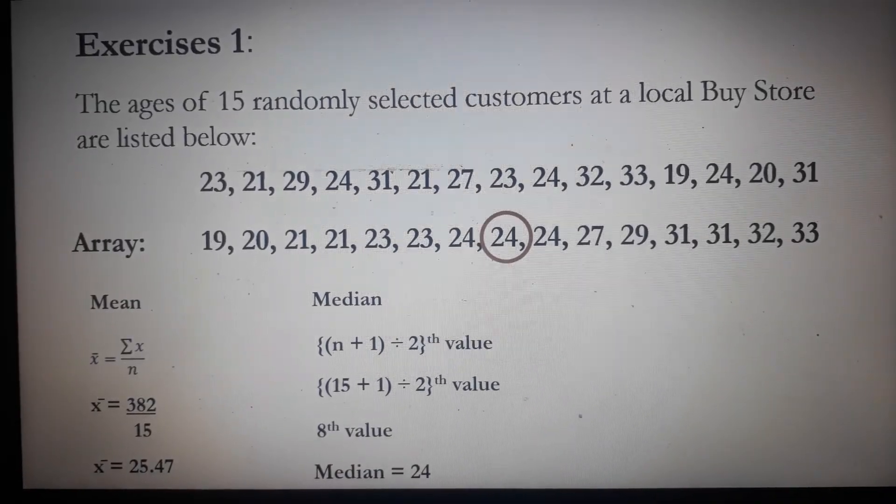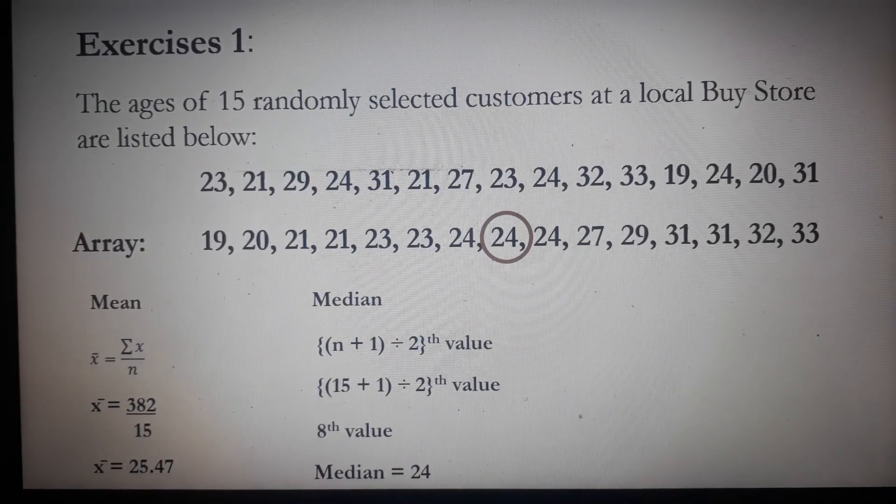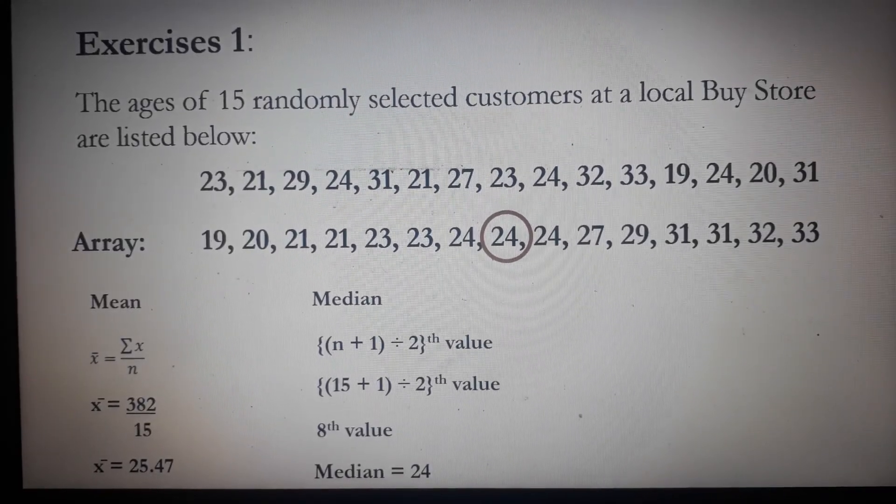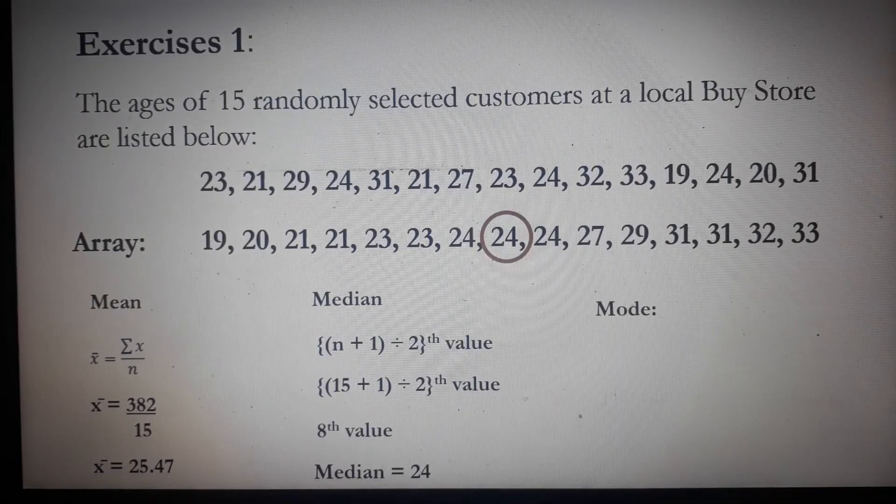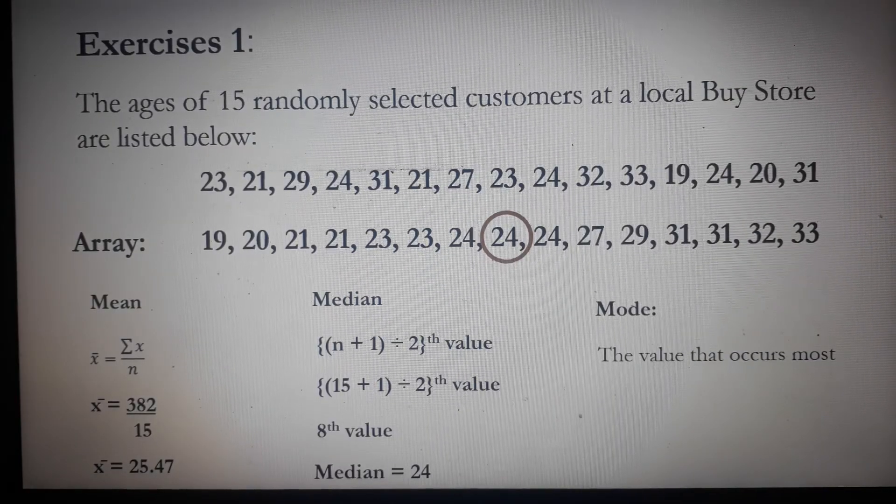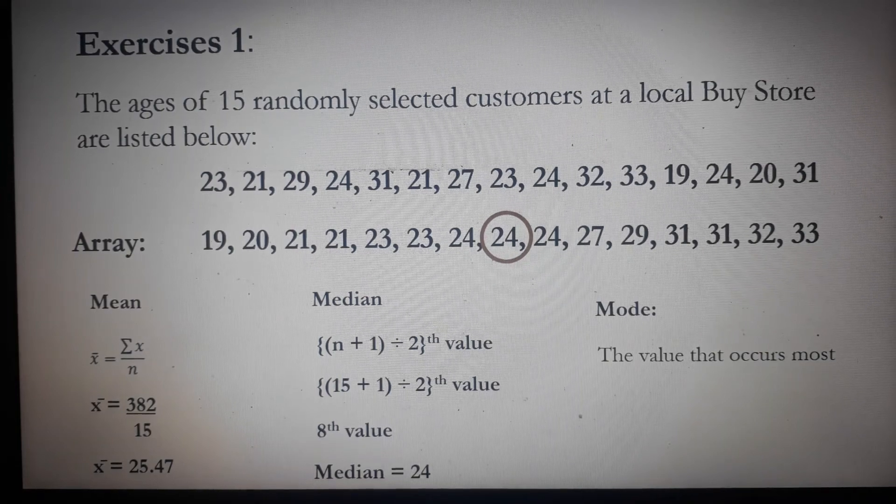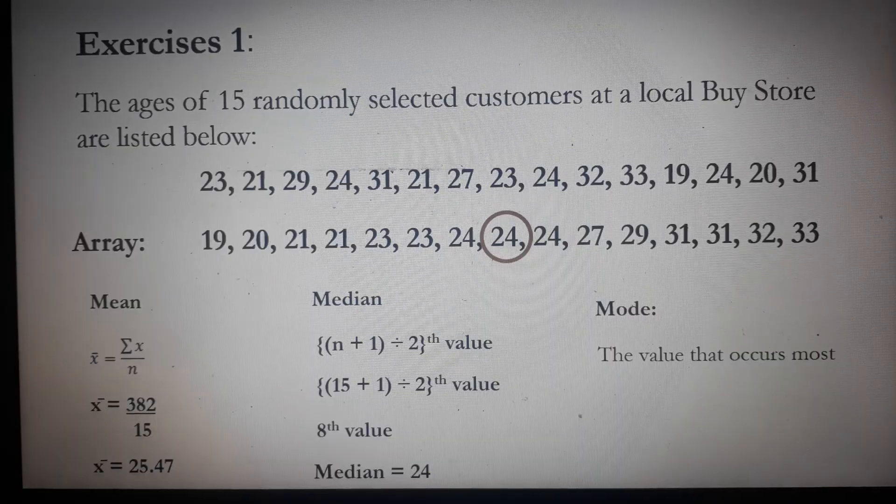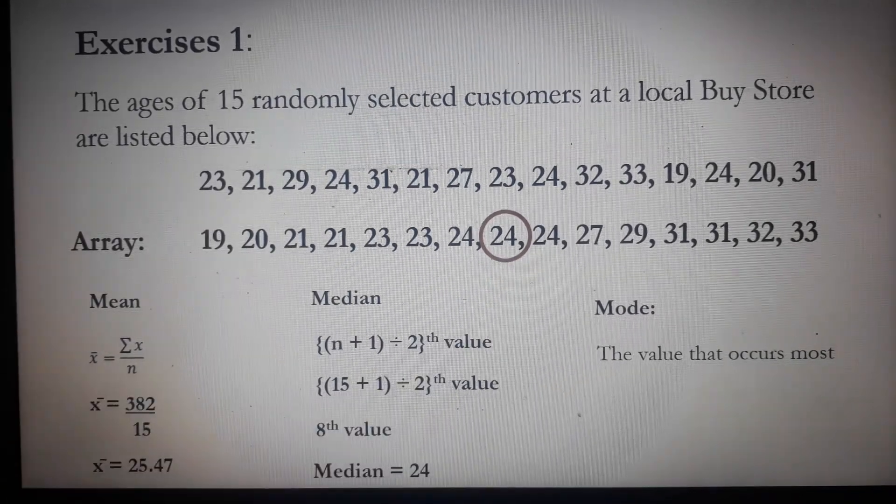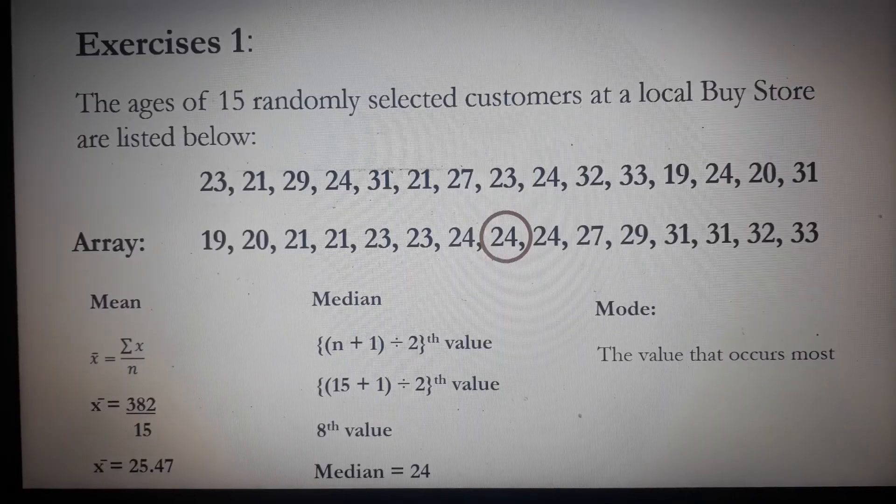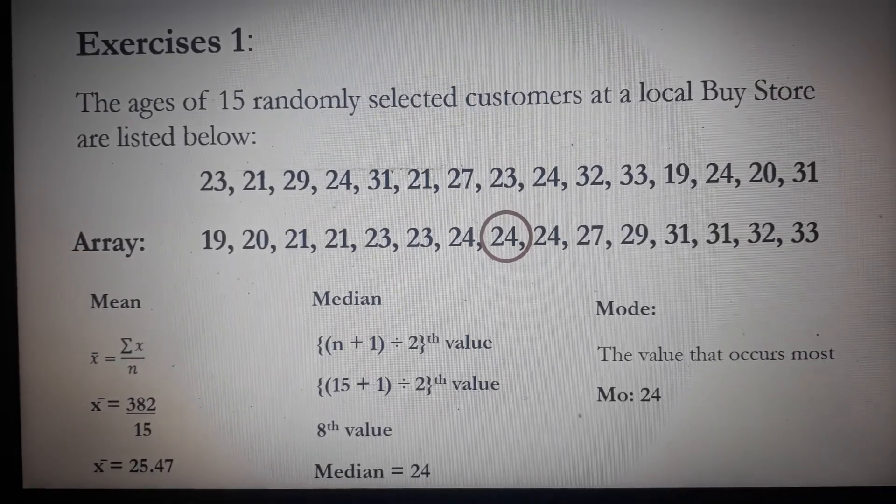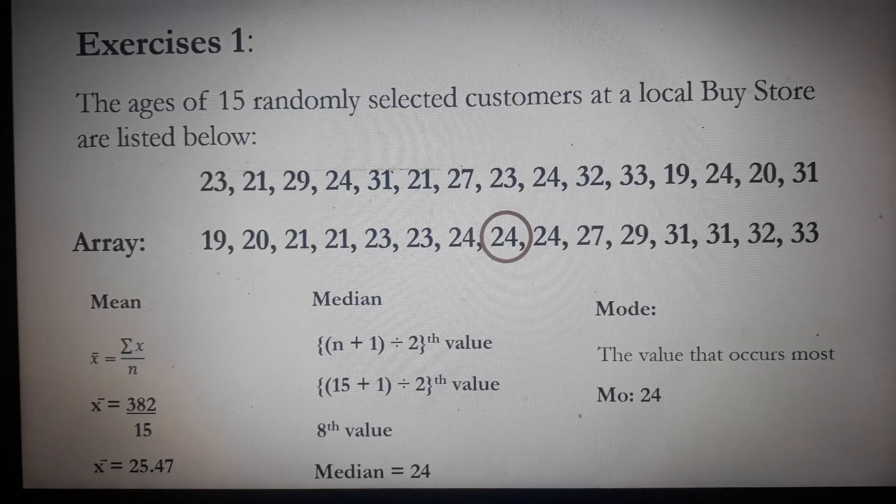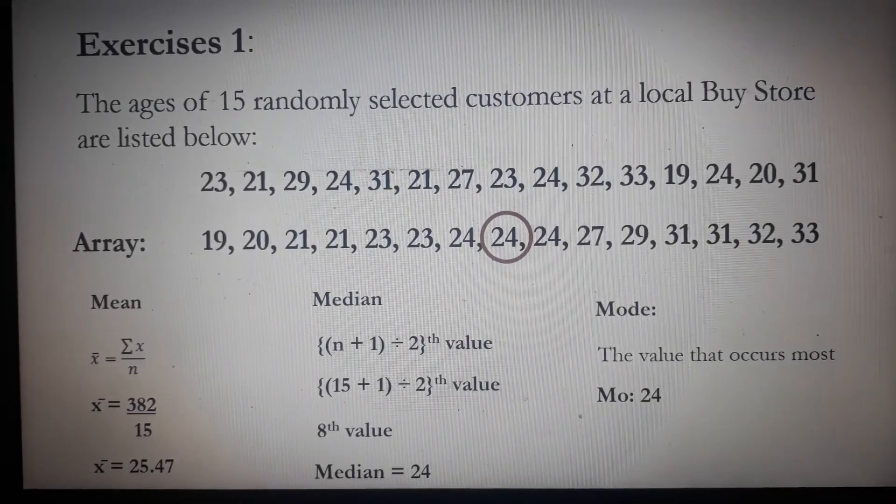Now, in case that n is an even number, simply get the average of the two middle numbers. For the mode, the value that occurs most in the data—by inspection, 24 is the age that occurs most. It occurred three times. So our mode is 24. Note that 21 and 23 both appeared twice.